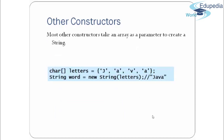There are more string constructors available. One example is passing a character array to new String(), which creates a string from the character array. You can also pass a string value directly. So there are different types of string constructors.